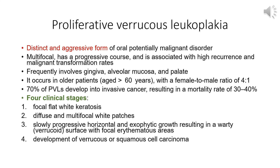Clinically PVL presents in four stages: first, focal flat white keratosis; progressing to diffuse and multifocal white patches; then slowly progressing to horizontal and exophytic growth resulting in a warty or verrucoid surface with focal erythematous areas; and finally development of verrucous or squamous cell carcinoma. Not all PVLs progress through all stages — carcinoma can occur even in the second or first phase of multifocal flat patches.